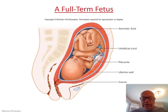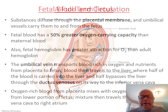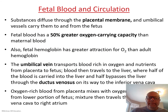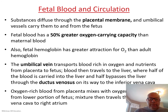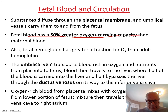In the final trimester, brain cells are forming rapidly. This is a full-term fetus. In fetal blood circulation, substances diffuse across the placenta, and fetal blood has a 50% greater oxygen-carrying capacity than maternal blood, giving the fetal hemoglobin a great attraction.